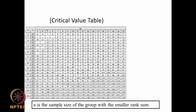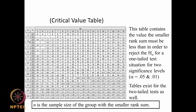Let us look at the table. Here n is the sample size of the group with the smaller rank sum, and you have two alpha values: 0.05 and 0.01 probability. The smaller rank sum must be less than the table value in order to reject H0 for a one-tail test. Similarly there is a table for the two-tail test. The rows represent the sample size of the group with the smaller rank sum, and the columns represent the sample size of the group with the larger rank sum.